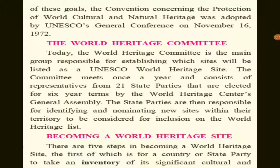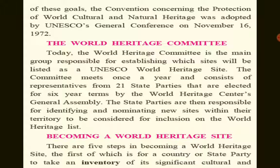The World Heritage Committee is the main group responsible for establishing which sites will be listed as a UNESCO World Heritage Site. The committee meets once a year and consists of representatives from 21 state parties that are elected for six-year terms by the World Heritage Center's General Assembly.